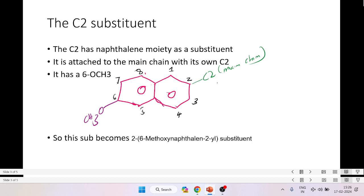The C2 has a naphthalene ring moiety substituent, and now if you number the naphthalene ring, it is shown how we number the naphthalene ring. We see that the naphthalene group is attached to the main chain with its own C2. Moreover, this naphthalene group has got a 6-methoxy substituent.